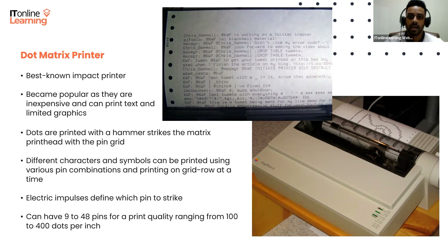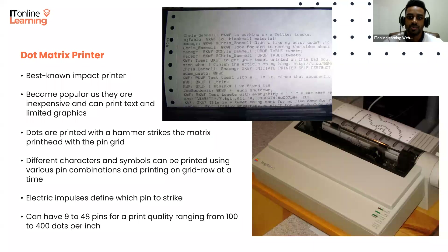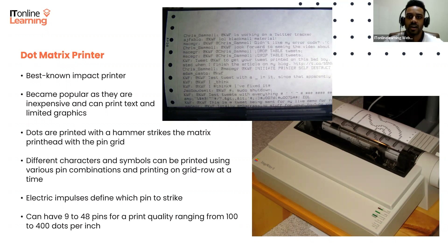Dots are printed when a hammer strikes the matrix printhead with the pin grid. Different characters and symbols can be printed using various pin combinations, printing one grid row at a time. The electric impulses define which pin to strike. Dot matrix printers can have 9 to 48 pins for a print quality ranging from 100 to 400 dots per inch.